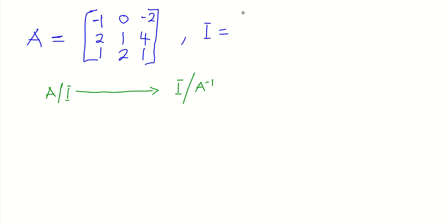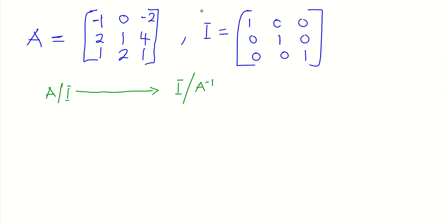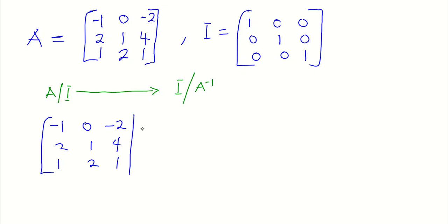Since matrix A is a 3 by 3 matrix, our identity matrix should also be a 3 by 3 matrix of the form: 1 0 0, 0 1 0, 0 0 1. We augment matrix A — which is minus 1, 0, minus 2, 2, 1, 4, 1, 2, 1 — with that identity matrix. We are interested in bringing the identity matrix to the left side, and the matrix we get on the right-hand side becomes the inverse.